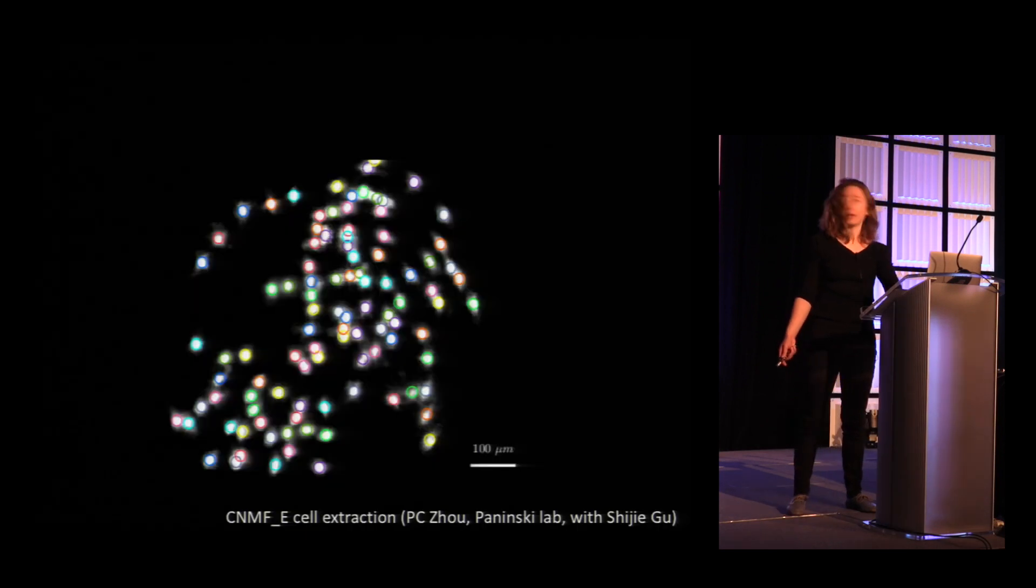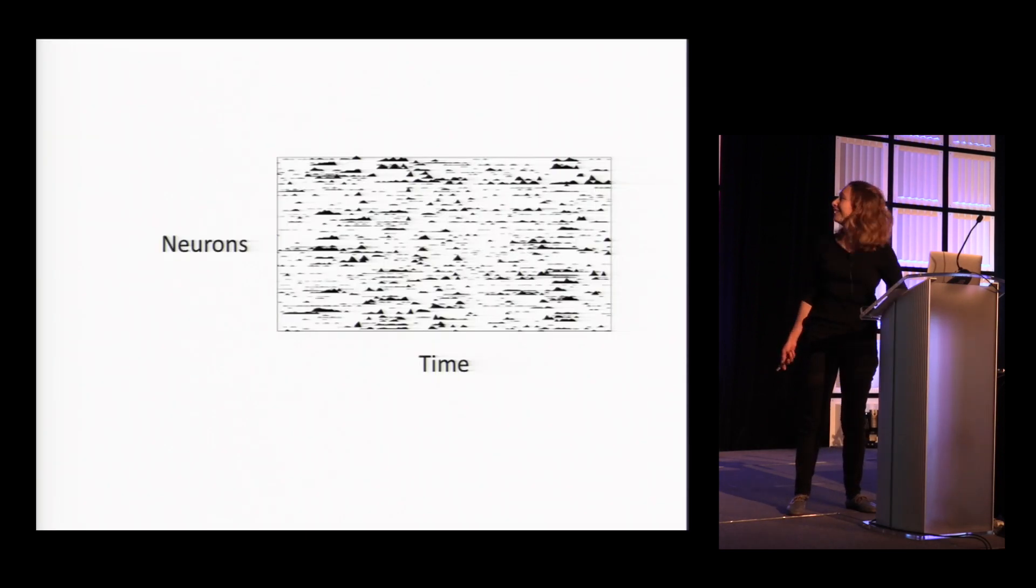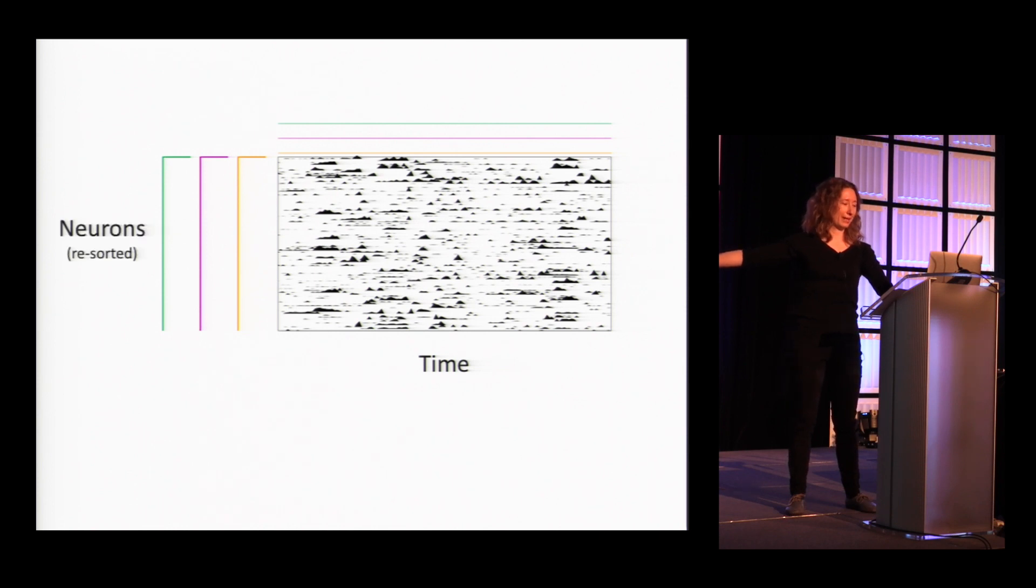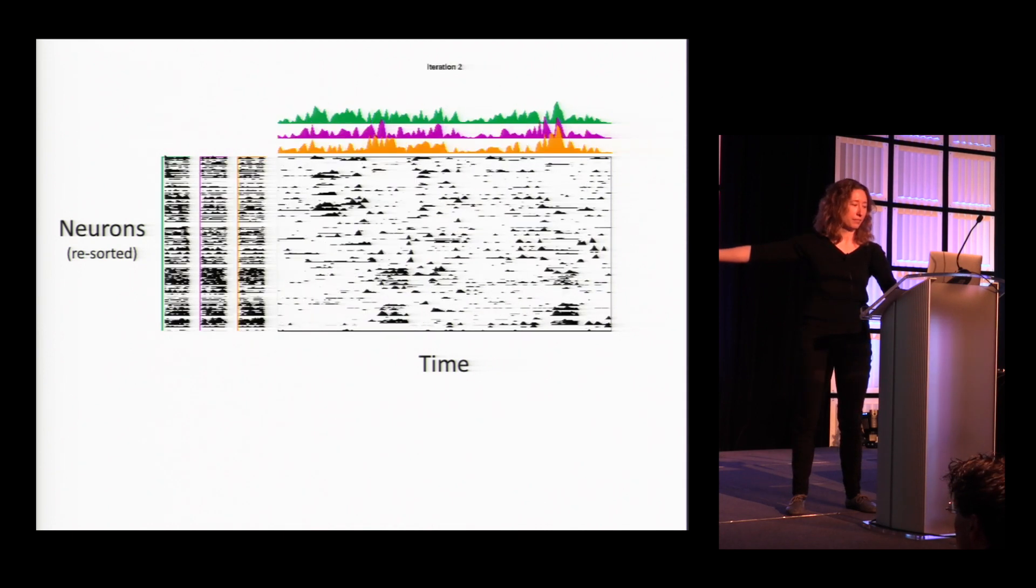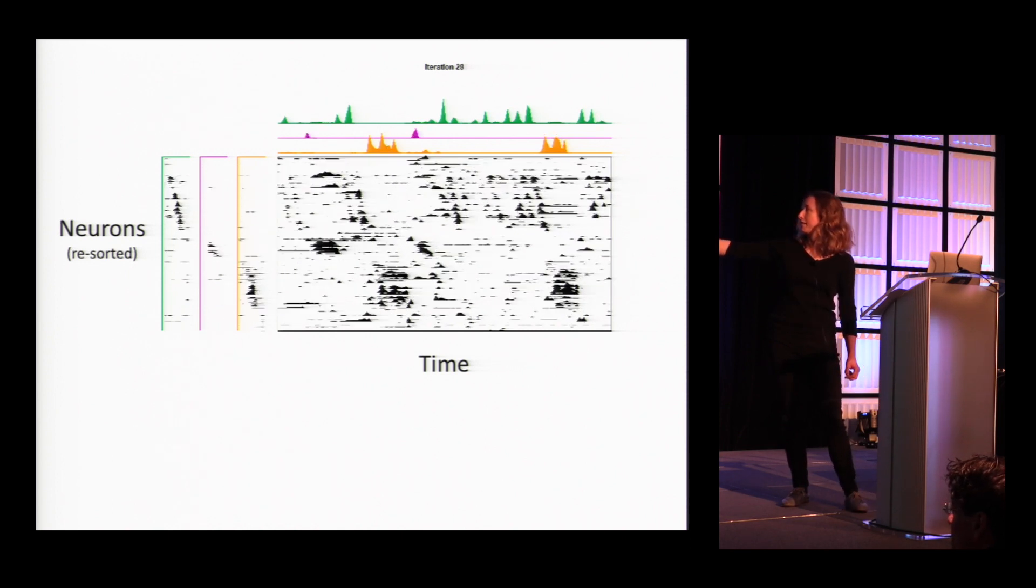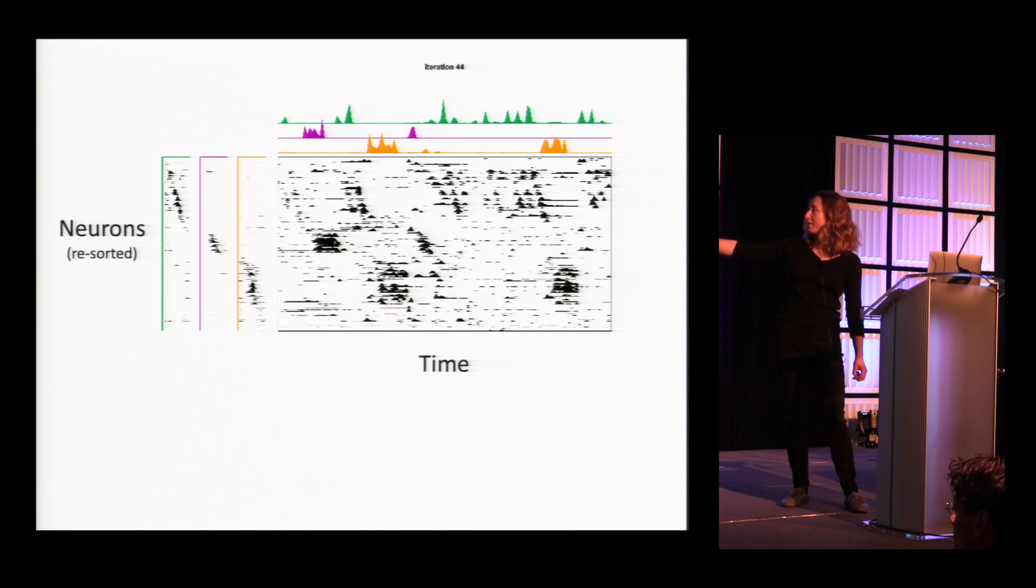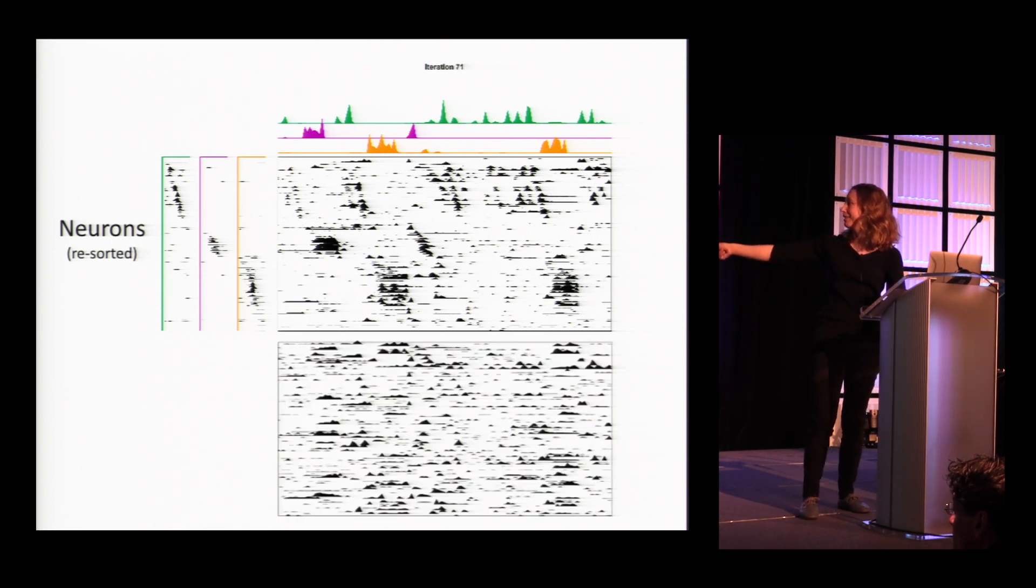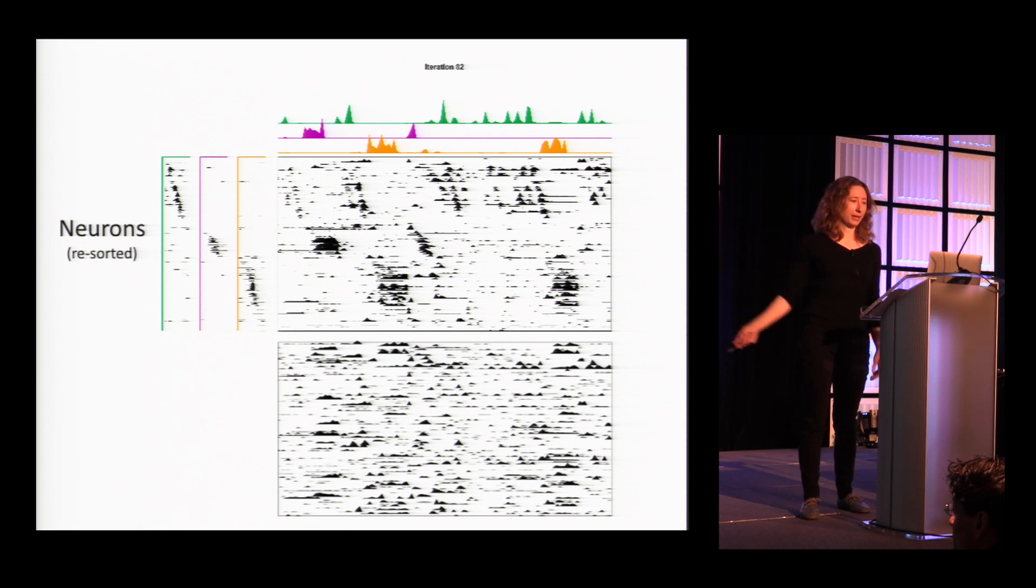Our goal here is to identify patterns that occur in this data and also the times at which these patterns might occur. I'm going to show you the algorithm running before I get into how exactly it works. As it's running, I'm going to resort the neurons according to their position in each of the patterns that are being extracted. It's the same matrix I showed, just resorting. You can see that we've extracted three different patterns which occur at particular points. This makes a lot more sense than the original picture where they're just in an arbitrary order.